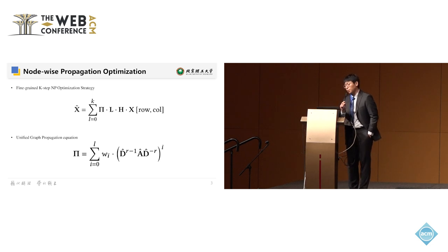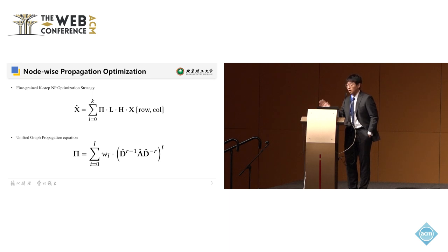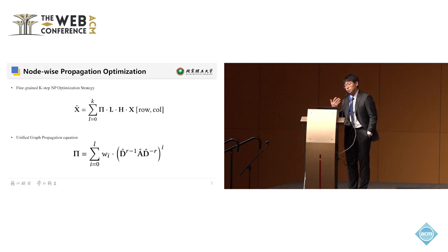There are also node-wise propagation optimization strategies that try to improve node-level predictive performance from diverse perspectives. One key component in the unified graph propagation equation is a kernel coefficient that guides the graph propagation throughout the whole process. Currently in all existing works, it is treated as a hyperparameter requiring human fine-tuning. In our work, we explore whether it can become an adaptive mechanism without human effort, choosing the most appropriate kernel coefficient value for all nodes in the graph.